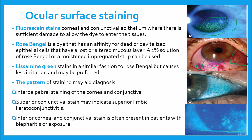Then there is lissamine green. It stains in a similar fashion to rose bengal but causes less irritation, as seen in this picture. The staining pattern is shown here in the conjunctival area. The pattern of staining may aid diagnosis: interpalpebral staining of the cornea and conjunctiva is common in aqueous tear deficiency; superior conjunctival staining may indicate superior limbic keratoconjunctivitis; inferior corneal and conjunctival staining is often present in patients with blepharitis or exposure. In dry eye syndrome, lissamine green solution is preferable to rose bengal as it stains in a similar fashion but causes less irritation, and the pattern of staining is very important.